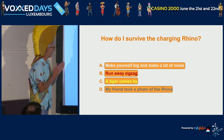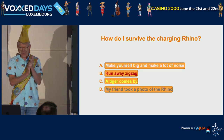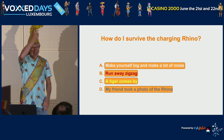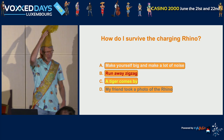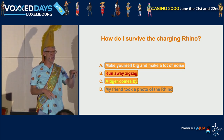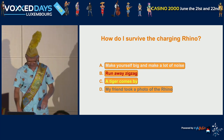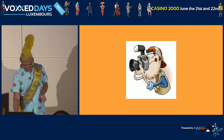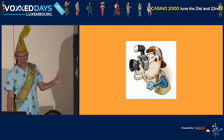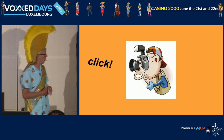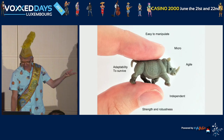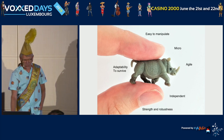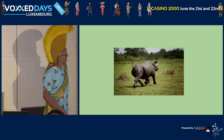How did I survive my rhino? Would you think A — make yourself big? B — run away zigzag? A tiger came by — my friend was sitting in the tree with a very old camera that made a very loud noise. The rhino felt so tiny and independent that it ran away. I survived my monolith. He went away.